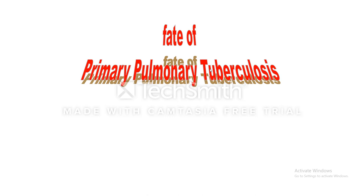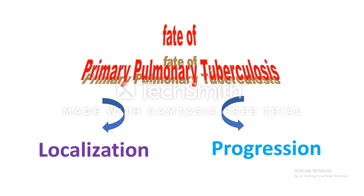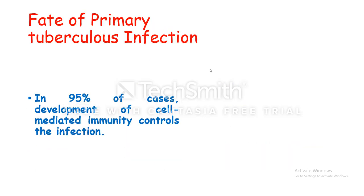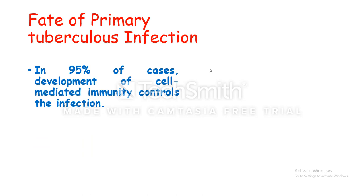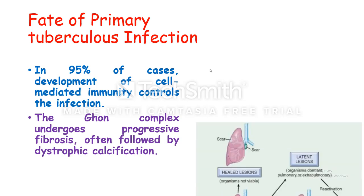What is the fate of primary pulmonary tuberculosis? It is either localization or progression. In the majority of cases — 95% of cases — because of the development of cell-mediated immunity, the infection is controlled, so it will be localization. The Ghon complex undergoes progressive fibrosis, followed by dystrophic calcification.